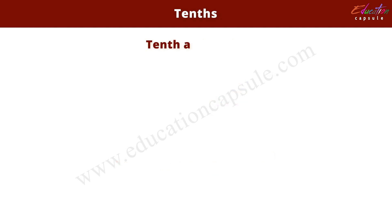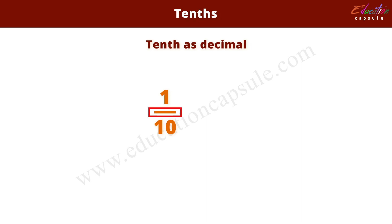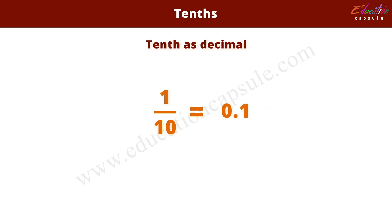Next is tenth as decimal. One tenth is the same as one out of ten, where this 'out of' is equivalent to divide. The fraction bar between numerator and denominator is the same as the division bar. So, one tenth is the same as one divided by ten, which is zero point one. So, one tenth is zero point one.